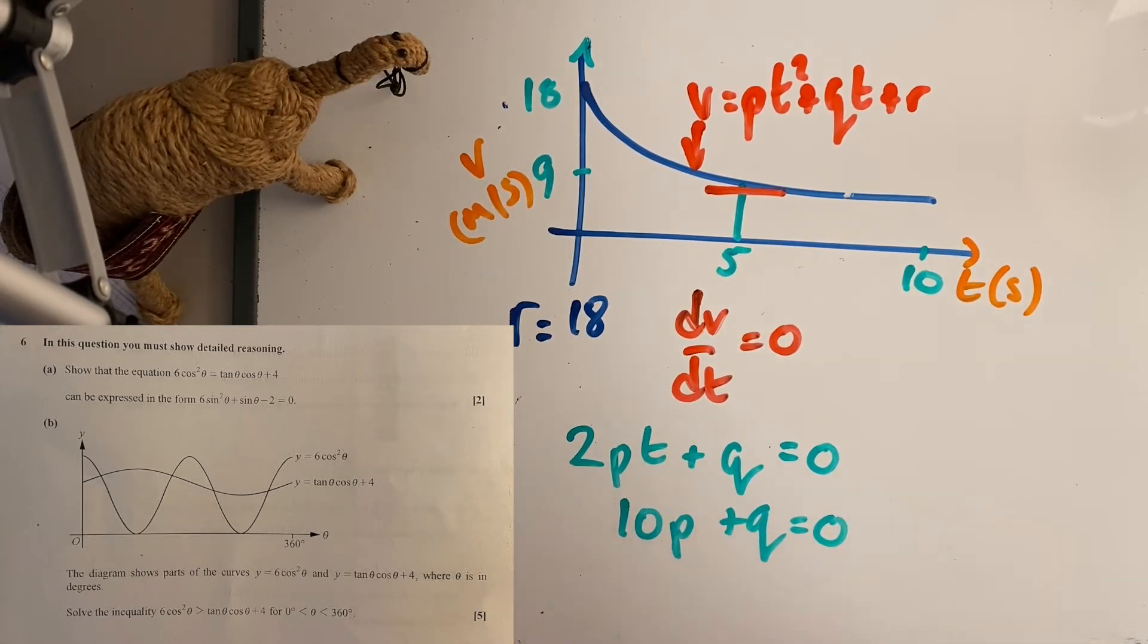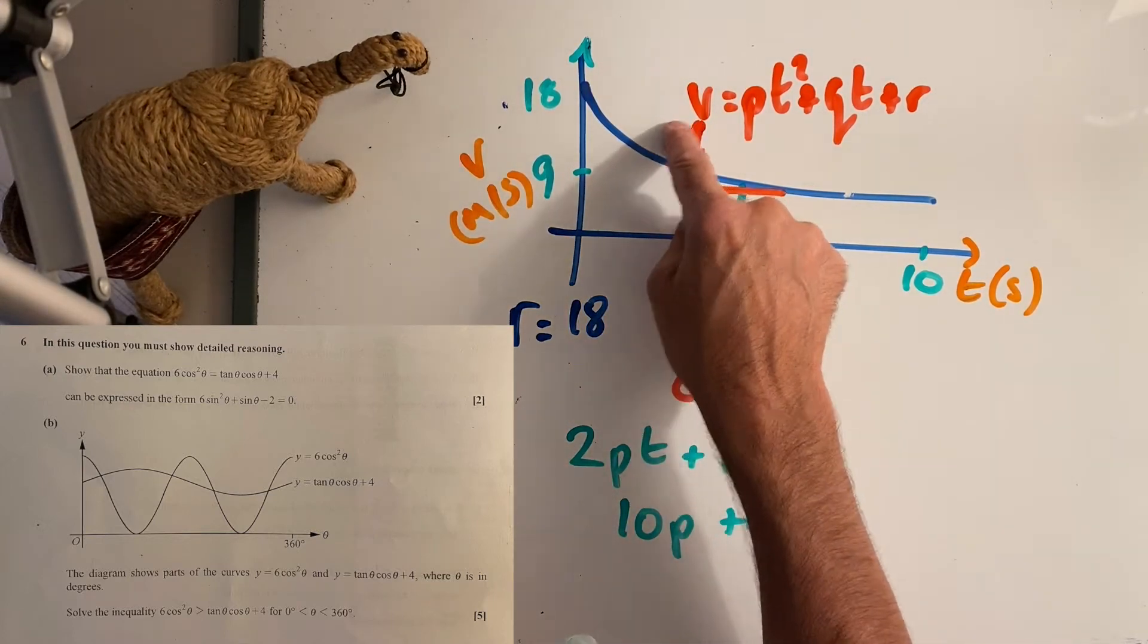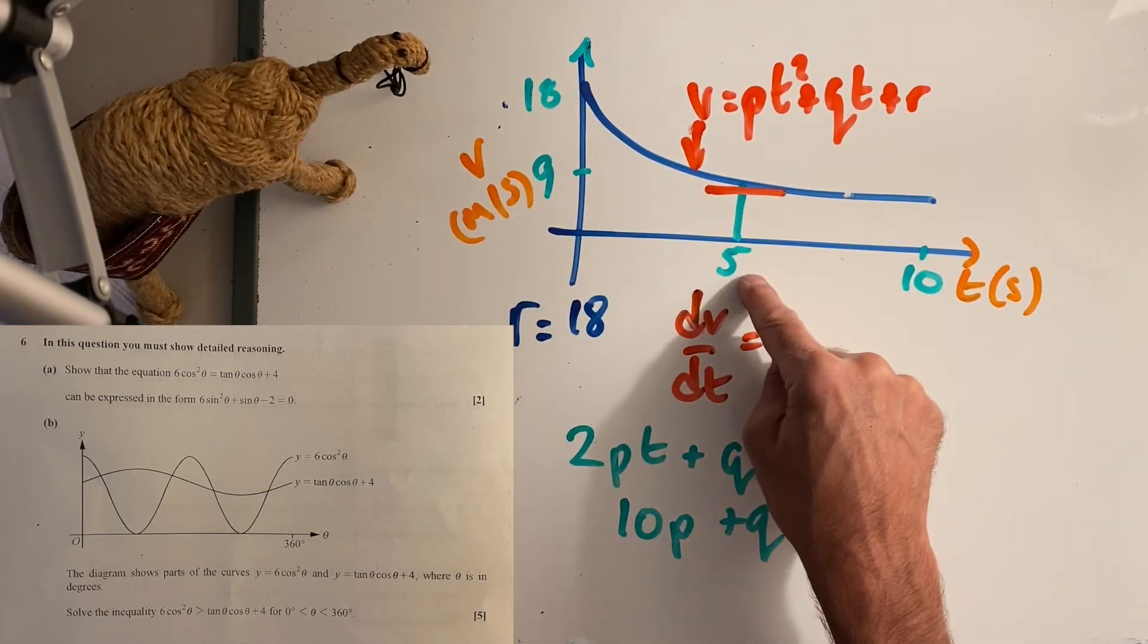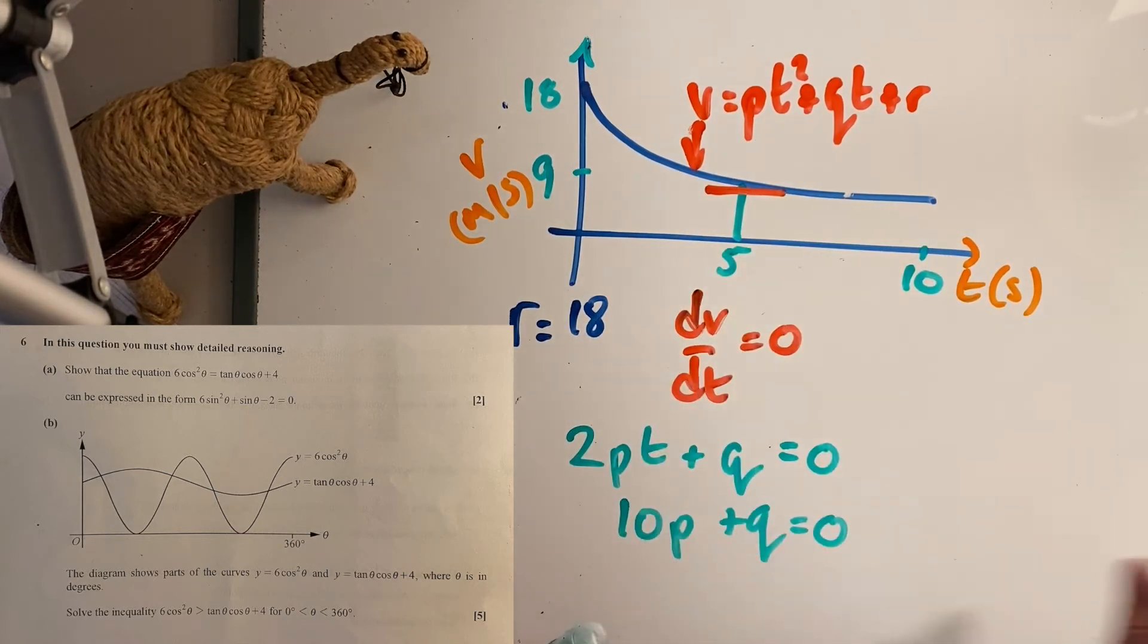To make it work, I know the coordinate points there. I know v is 9 when t is 5, so I can put that in there as well.